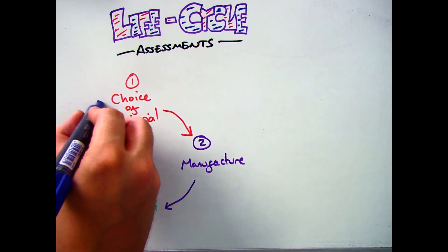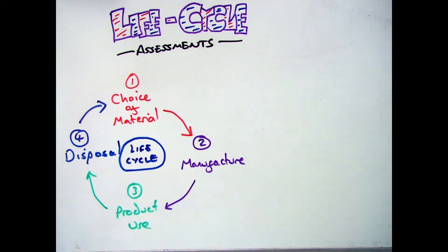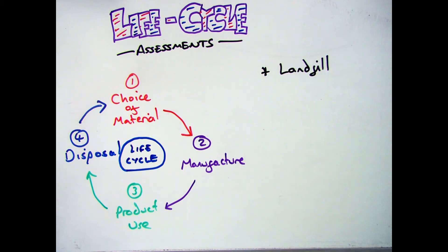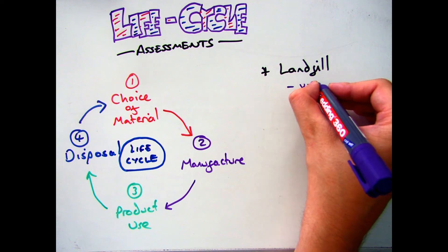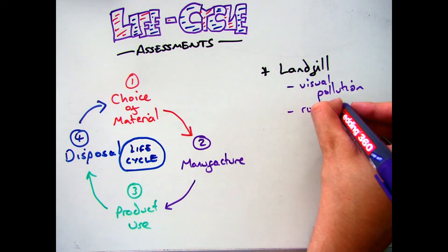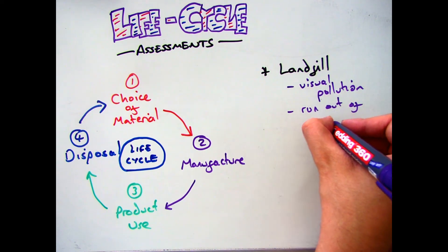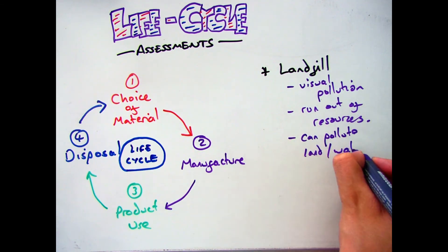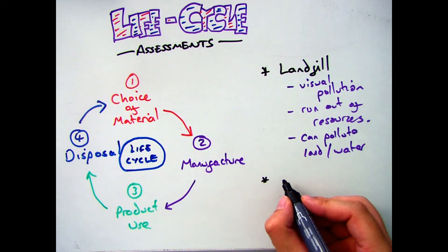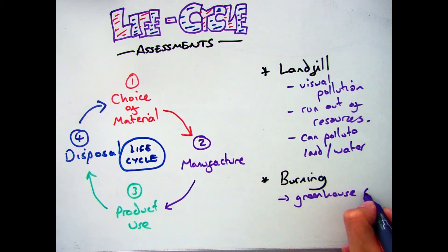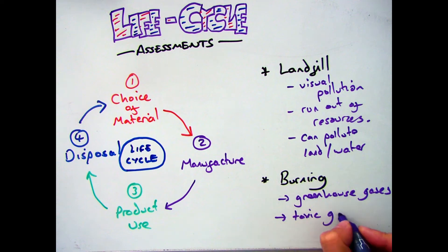The final part of a lifecycle assessment is looking at how it's disposed of. There are three different ways: first, recycling, which was covered in a previous video. Second, landfills — where you literally put the product into the ground. Large landfills cause visual pollution, we're also going to run out of resources, and they can pollute the land and water. Third, burning — this gets rid of products quickly, but again you're going to run out of resources, and it produces greenhouse gases and toxic gases.